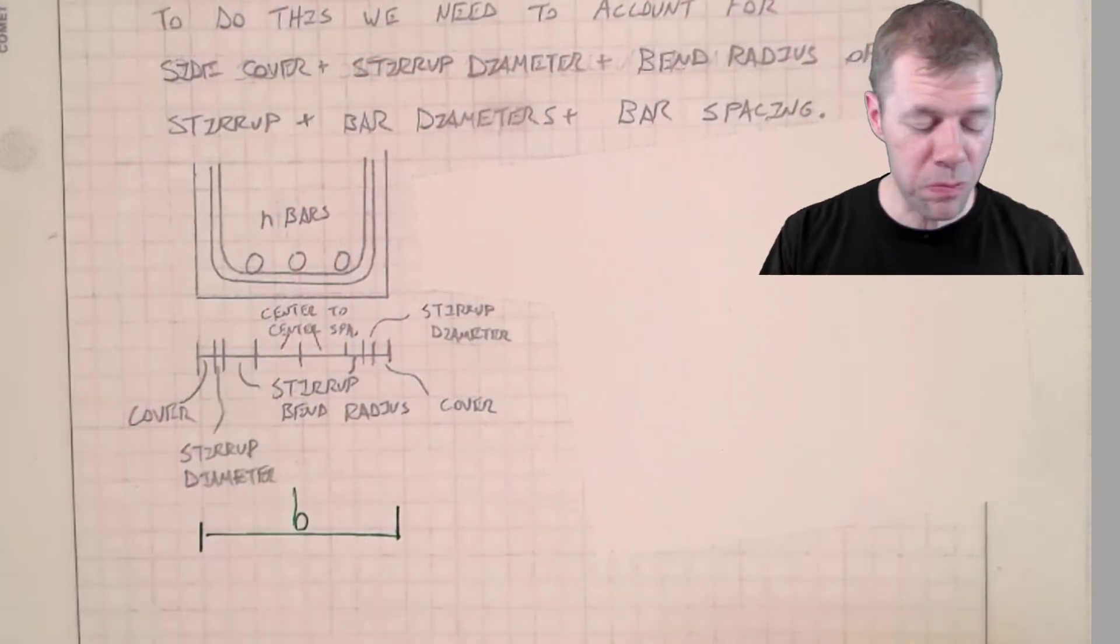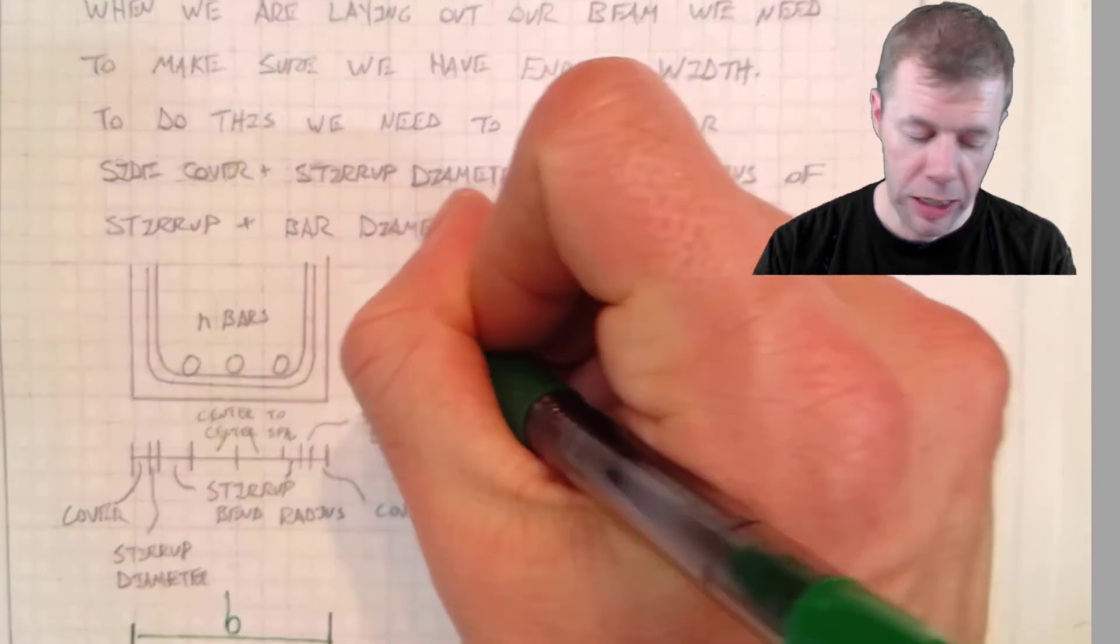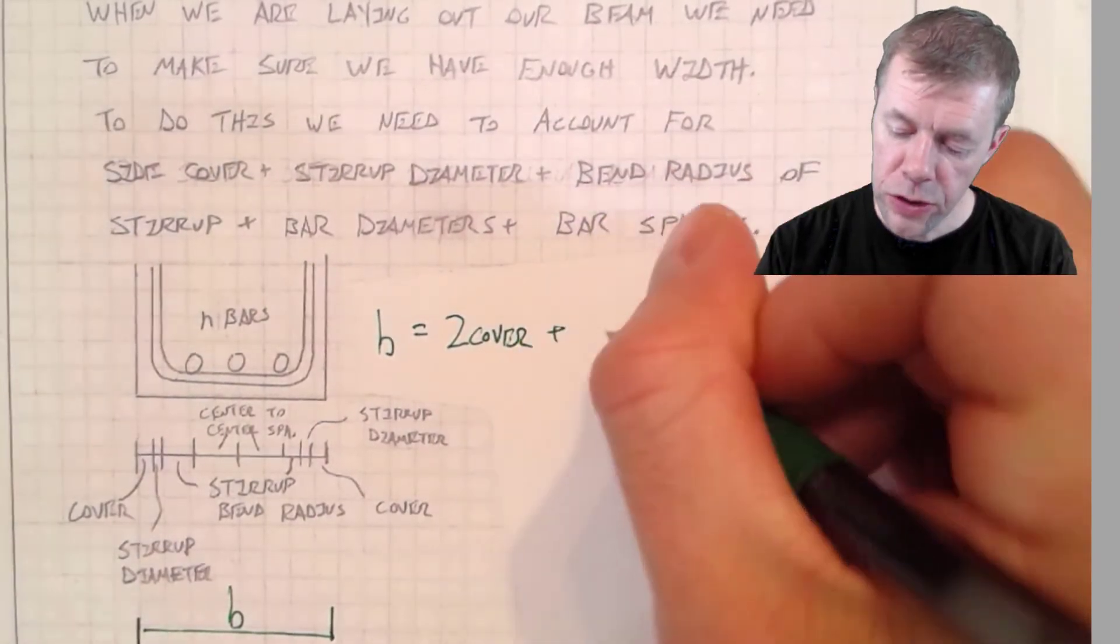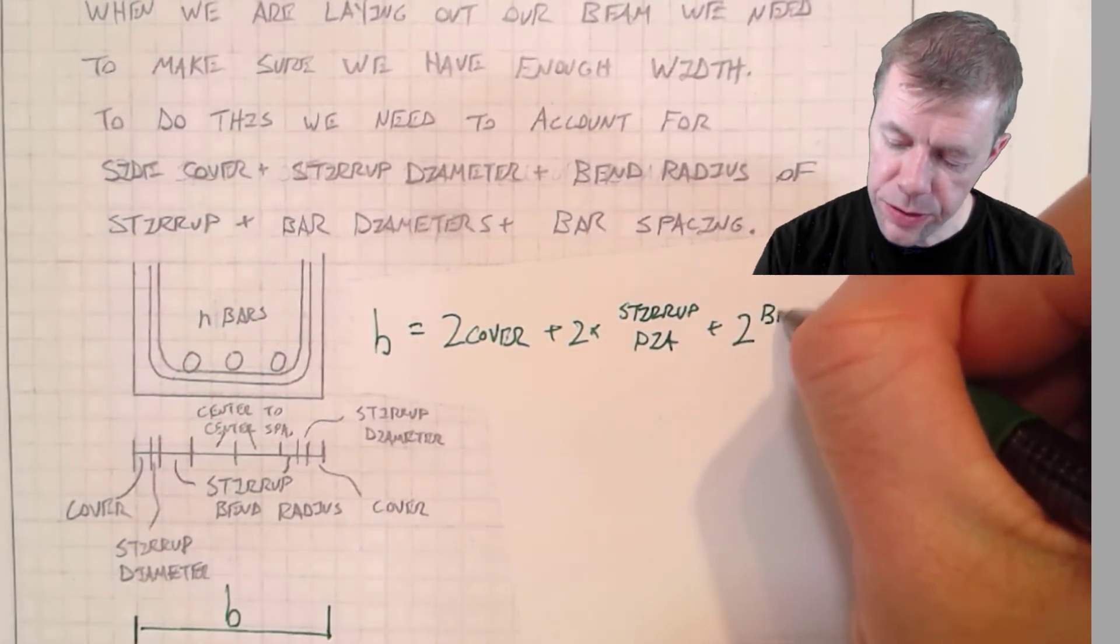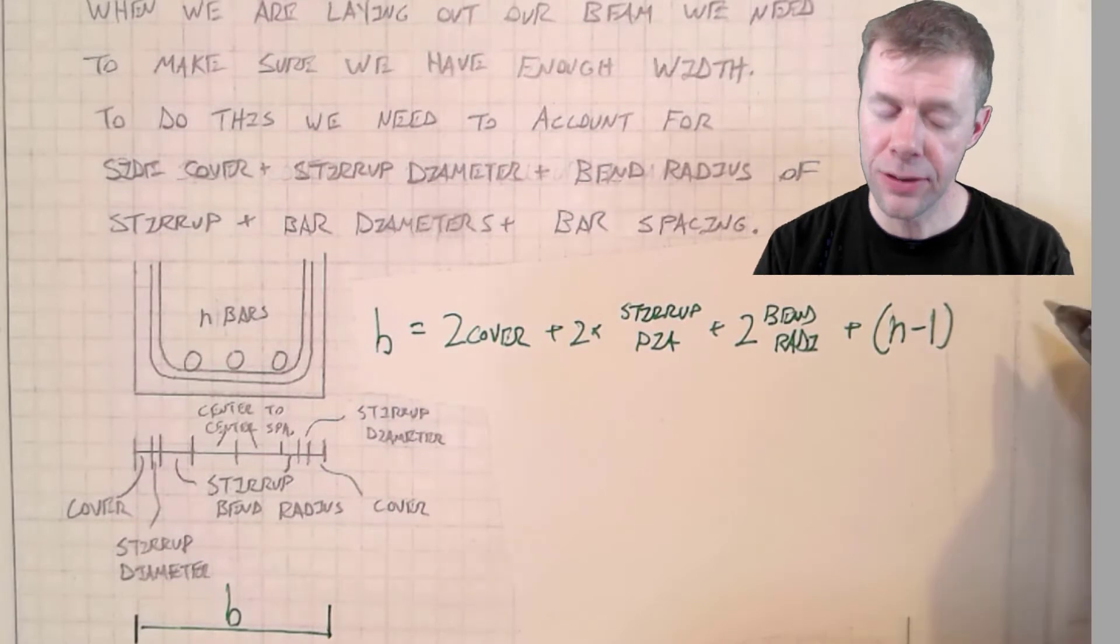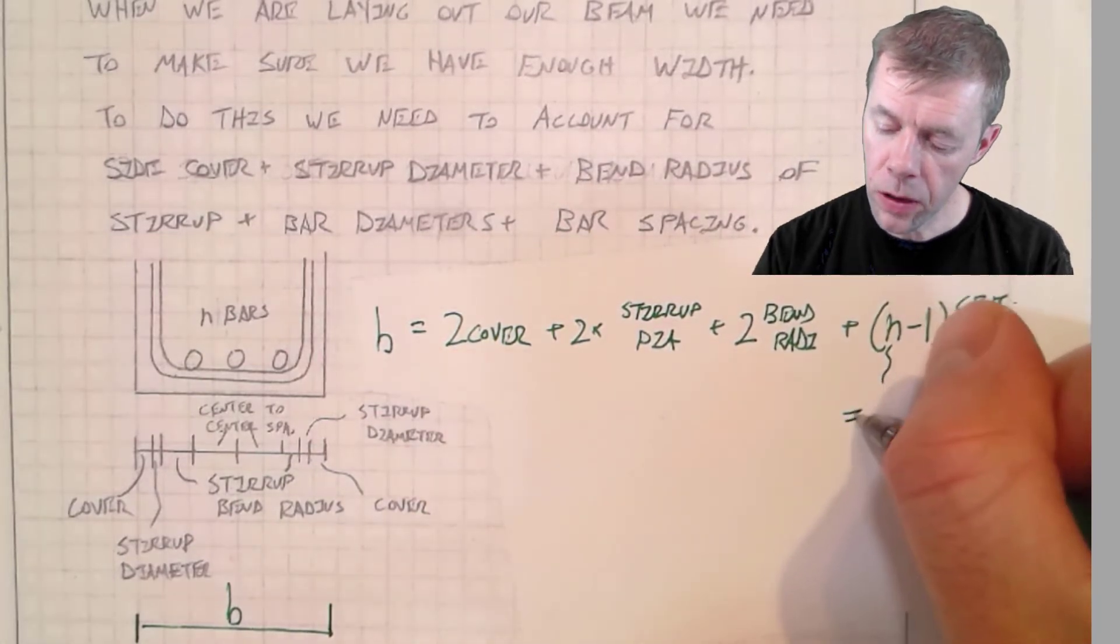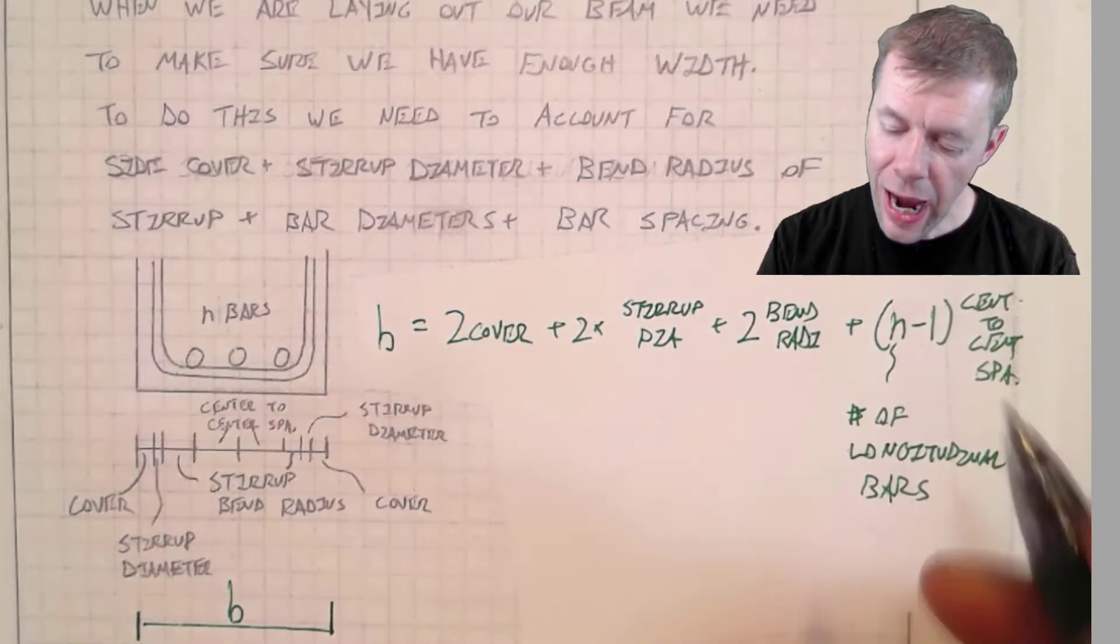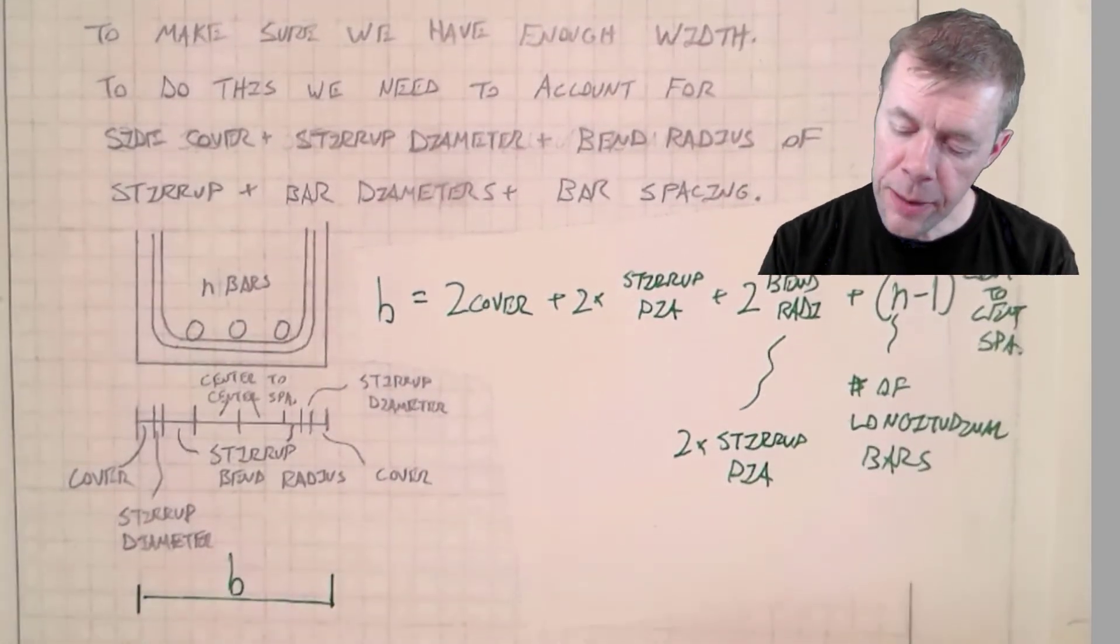Here's our layout. Let's do a little bit of math. Our total width of our beam, that's B, has to be equal to two times the cover, plus two times stirrup diameter, plus two times the bend radius, plus n minus one times the center to center spacing of the bars. And what's n? n is the number of longitudinal bars. Very cool. And also, I told you another secret. I told you the bend radius is actually equal to two times the stirrup diameter. This means I can simplify this equation.